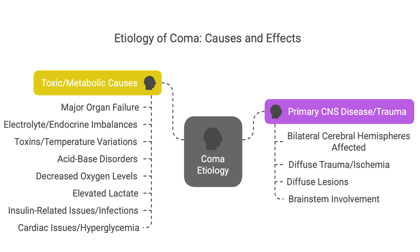The source differentiates between two main categories of coma: toxic metabolic versus primary CNS disease or trauma. Toxic metabolic coma is like a system-wide shutdown caused by something messing with the body's chemistry — a drug overdose, severe infection, organ failure, or an electrolyte imbalance. Primary CNS disease or trauma suggests a problem within the brain or spinal cord itself, like a stroke, brain tumor, or traumatic brain injury.